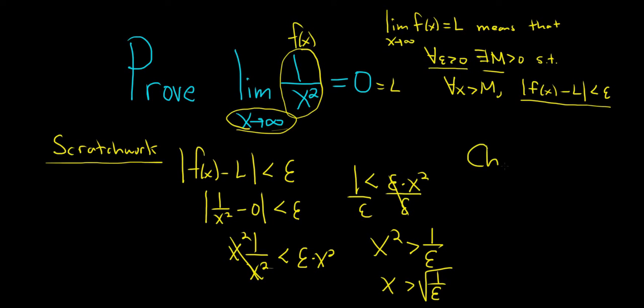Okay, so we're going to choose an M bigger than the square root of 1 over epsilon. You can do that by something called the Archimedean principle. So given any number, you can find a natural number that is bigger. We're allowed to do that thanks to Archimedes.